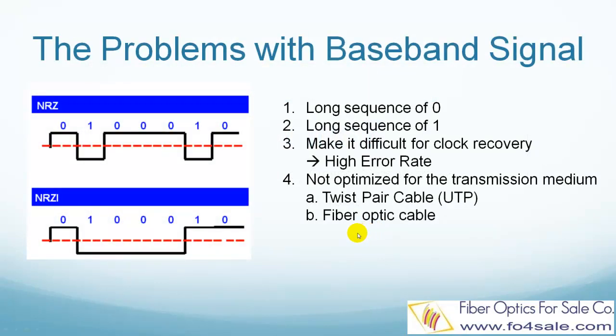If we want to understand the 8-bit, 10-bit mapping process, we have to understand the problems of directly transmitting baseband data. Here we can see an example of raw baseband digital data. We have a long sequence of zeros. You may also get a long sequence of ones. They both present the same problem.